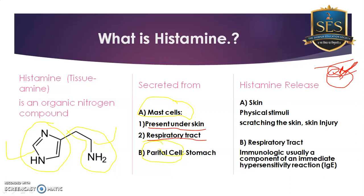Because of this increased blood flow, you will find a reddish patch on the skin. So just scratch your skin and you'll see that redness, indicating you have provided a physical stimulus to the mast cells located under your skin, which immediately releases histamine, causing inflammation and vasodilation.